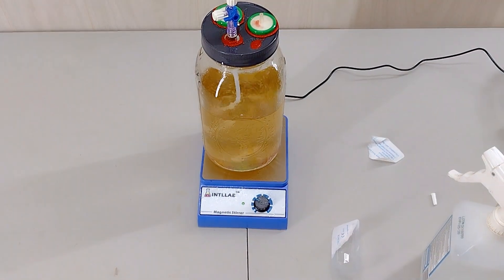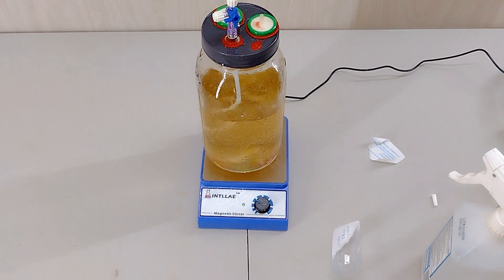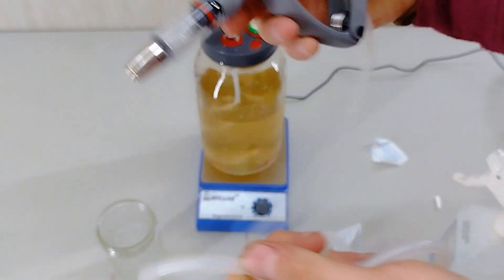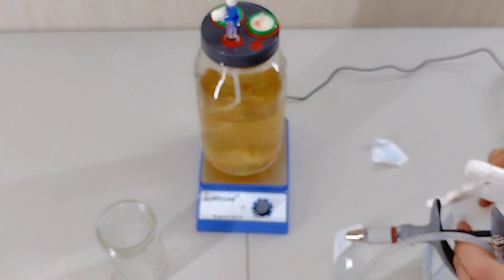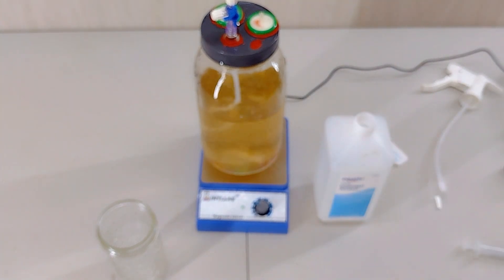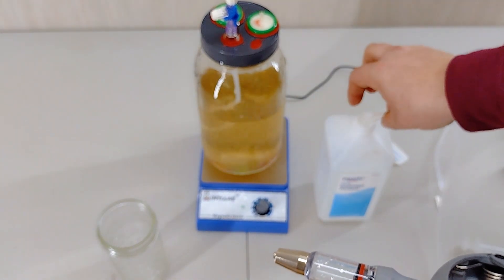Now that we have that on nice and tight, we can get ready to put our continuous syringe on. But first, we've got to sanitize it. So, the way that we're going to do that is, we're going to take off the lid off our isopropyl alcohol, and we're just going to put the tube right in there.